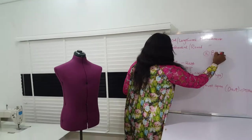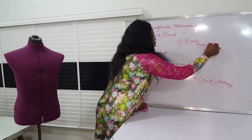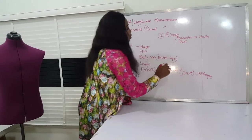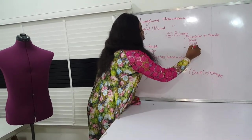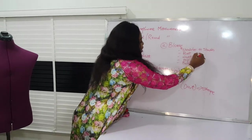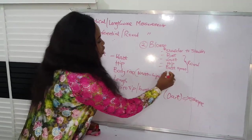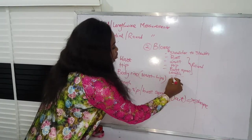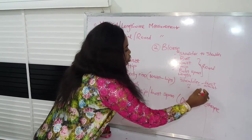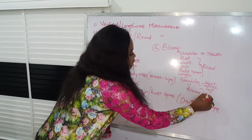For the second garment — making a blouse — we need the shoulder-to-shoulder measurement, the bust circumference or round bust, the waist, the hip, and the bust span. These are the round measurements. Then for the lengthwise measurements, you take shoulder-to-bust, shoulder-to-waist, shoulder-to-hip, and the blouse length.